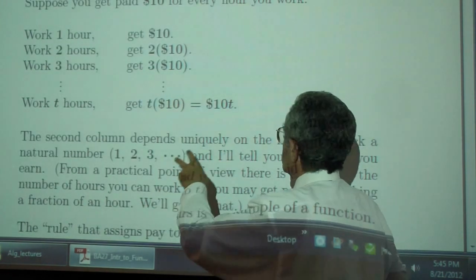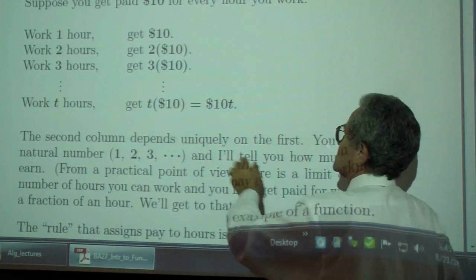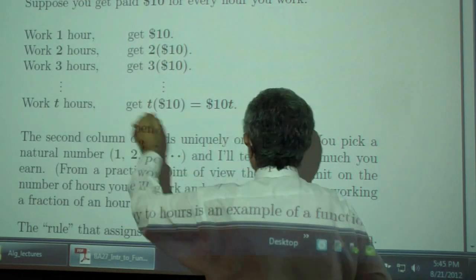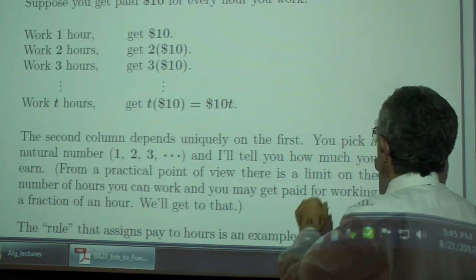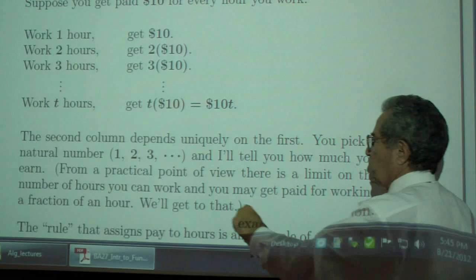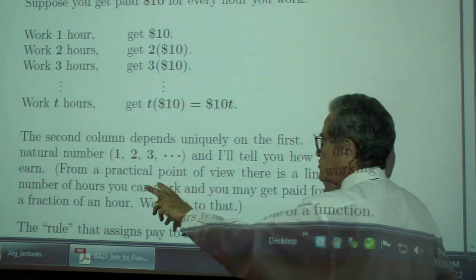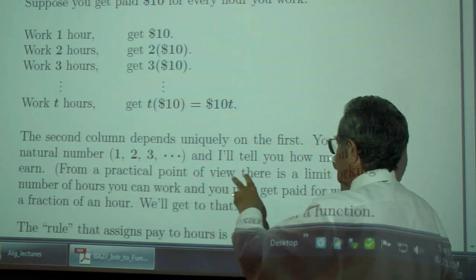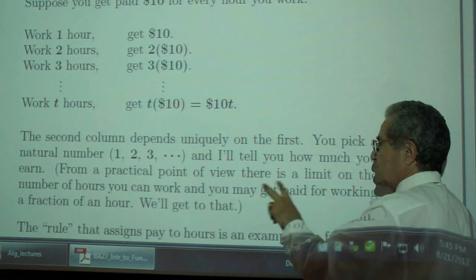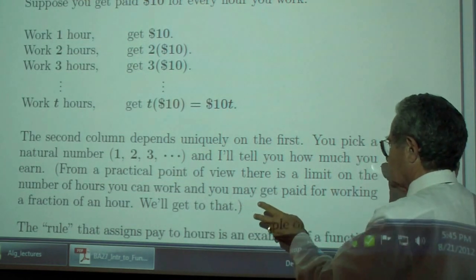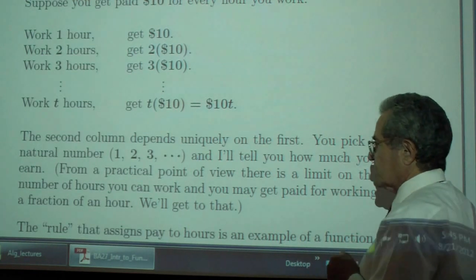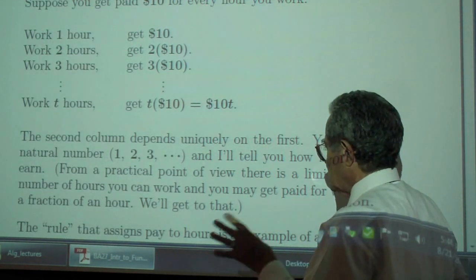The second column depends uniquely on the first. You pick a natural number 1, 2, 3, and so on, and I'll tell you how much you earn. From a practical point of view, there is a limit on the number of hours you can work, and you may get paid for working a fraction of an hour. We'll get to that.